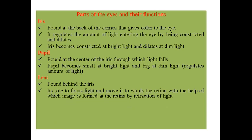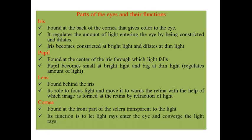The lens is found behind the iris. Its role is to focus light and transmit it to the retina — so generally the lens supports the formation of an image on the retina. The cornea is the front part of the sclera, which is transparent to light. Its role is to let light rays enter the eye and also to converge the light rays.